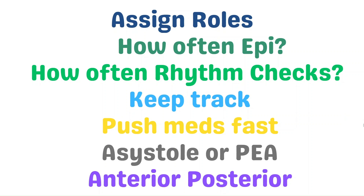Now let's go over specific nursing tips. To make everything as smooth as possible, ensure roles are assigned. Coordinate with your provider how often they want epinephrine administered and how often they want rhythm checks. Ask about additional medications often given during a code, such as calcium chloride and sodium bicarb. Some providers may want to administer these early on; others may wait until the H's and T's are being addressed. As the recorder, keep track of how many rounds of CPR, medications given, how much of each, and the patient's overall downtime.